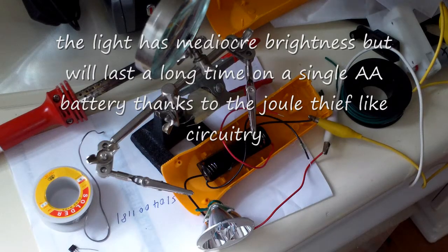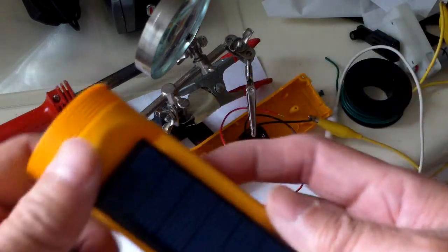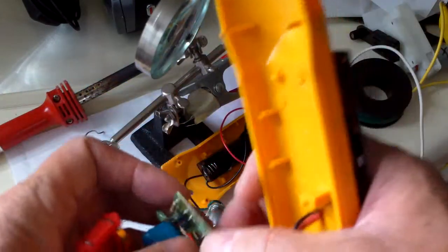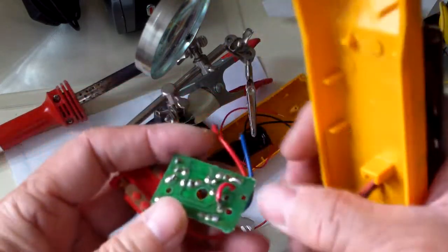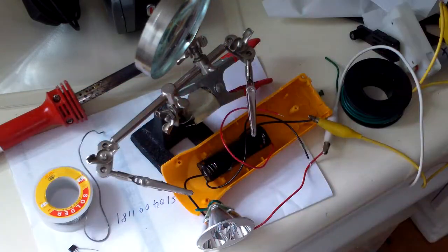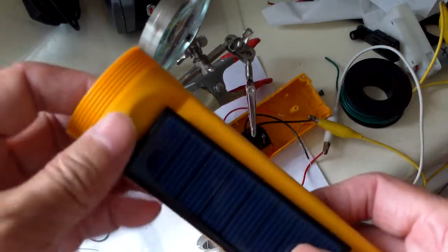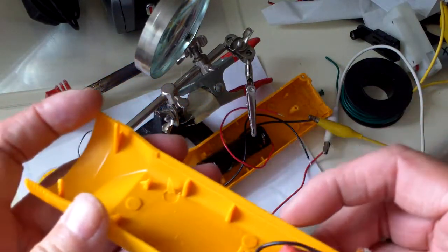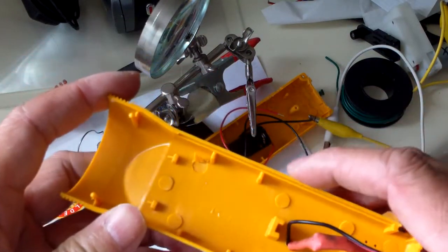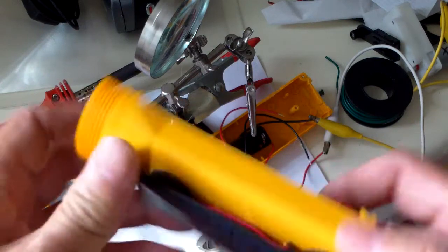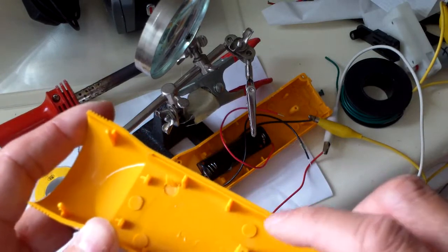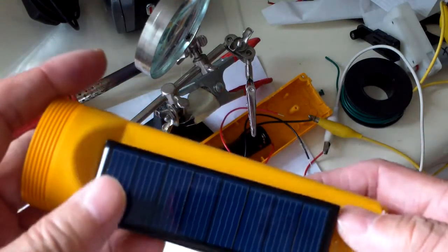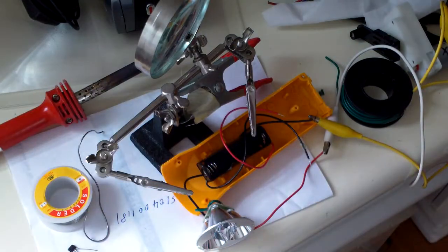This flashlight here I converted originally from an AC rechargeable flashlight to a solar rechargeable one. It uses a lithium polymer type battery, but unfortunately the lithium polymer battery doesn't seem to be working or holding the charge anymore.